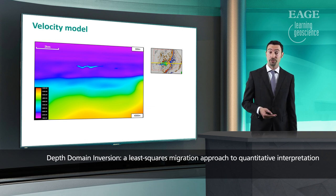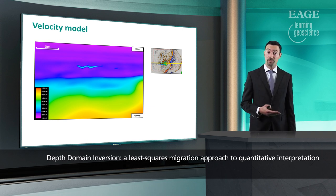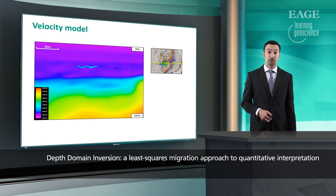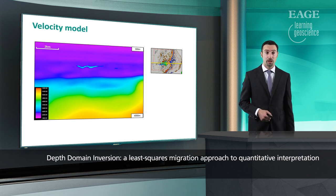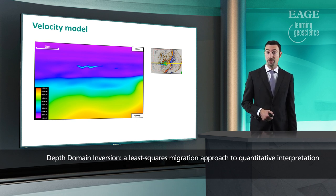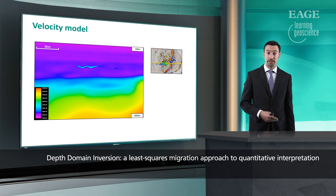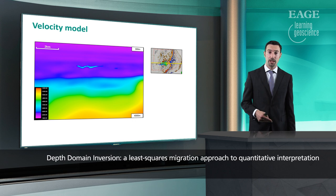Full waveform inversion, on the other hand, will also be sensitive. However, it depends on how deep these bodies are in comparison to the maximum offset of the acquisition geometry. A very commonly used approach is to actually manually insert these geobodies into the velocity model, once they have been either manually interpreted or estimated by a post-stack acoustic inversion and then identified through Bayesian classification. And this is what has been done in this particular case.